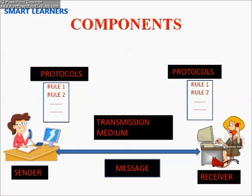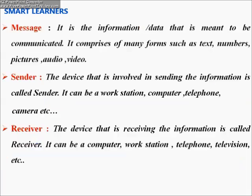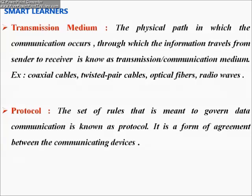The components involved in data communication are: a sender to send the information, a receiver to receive the information, a transmission medium — the channel through which data travels — a message, which is the information or data itself, and protocols, which are the set of rules that govern data communication, forming an agreement between communication devices.